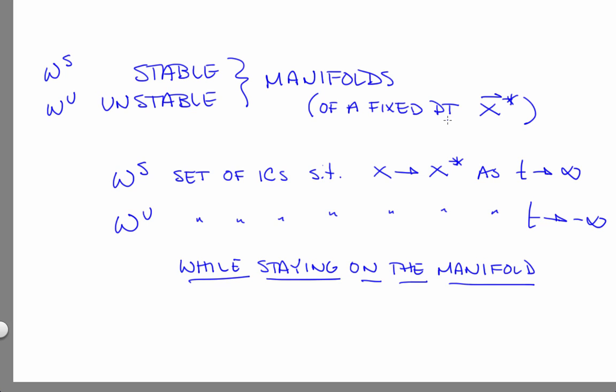These manifolds are surfaces in the state space, loosely speaking, that are like nonlinear generalizations of eigenvectors, in the sense that they are invariant manifolds. A state that starts on one of these manifolds stays on it, just like an eigenvector. They start out tangent to the eigenvectors, but then they curve around, as dictated by the dynamical landscape.